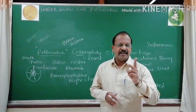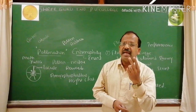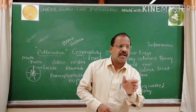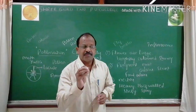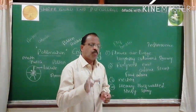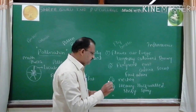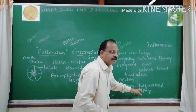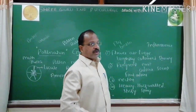Pollen grains are covered by exine and intine — an outer layer called exine and inner called intine. Exine is tough, cutinized, and often provided with spinous outgrowths. It protects pollen grains from herbivorous animals and helps in dispersal. Pollen grains are heavy, thick-walled — so not easily damaged by visiting insects — and sticky and spiny so they can get adhered to the body of insects.